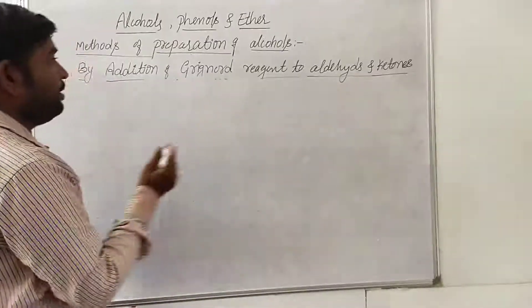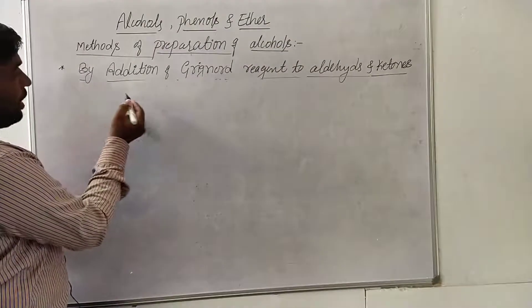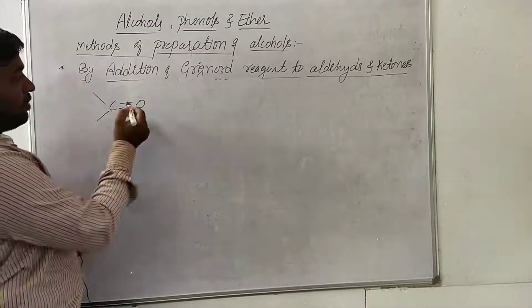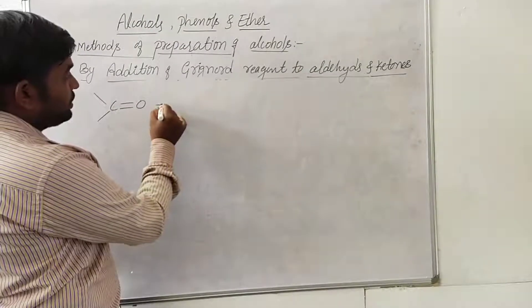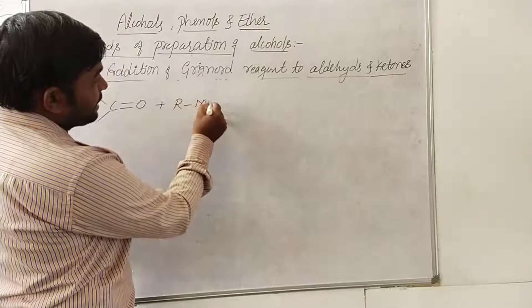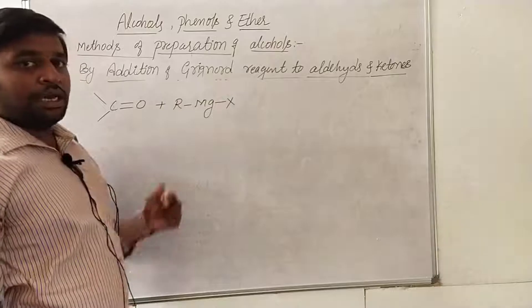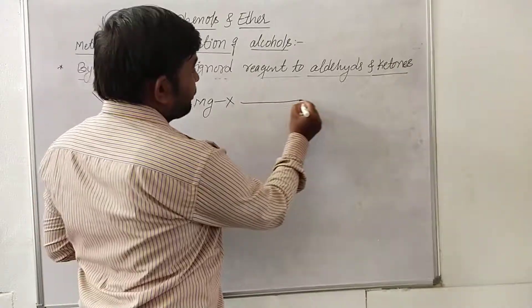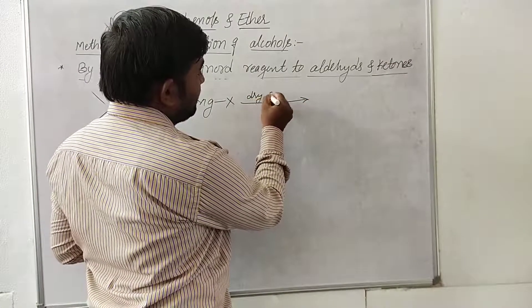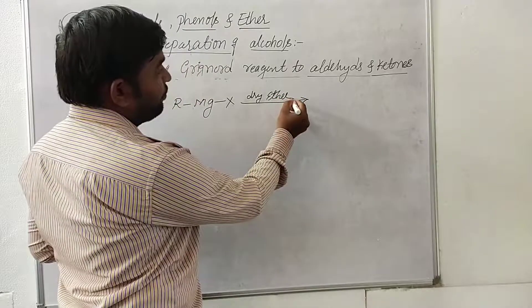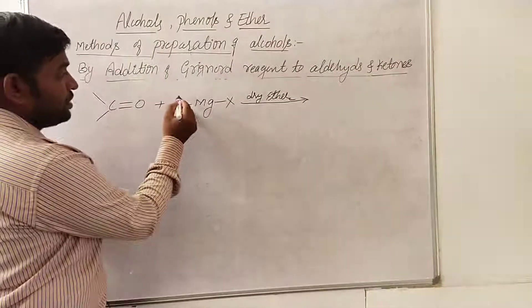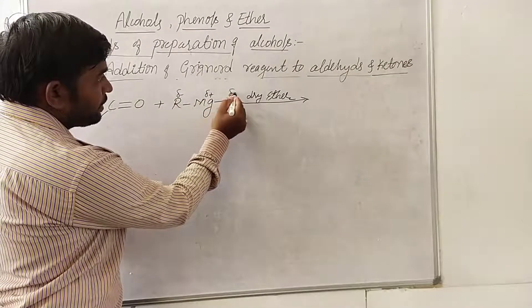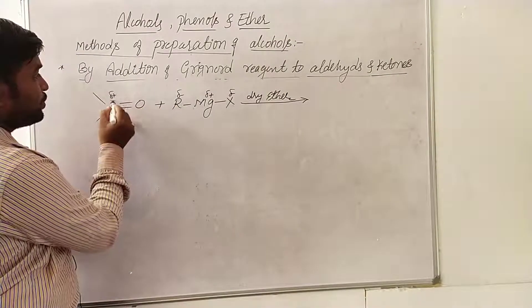Now let us consider one example. Take any aldehyde or ketone — that is, one carbonyl group. To that, if you add RMgX, which is alkyl magnesium halide (also called Grignard reagent), in presence of dry ether, the addition of alkyl group takes place to the partially positive carbon atom.